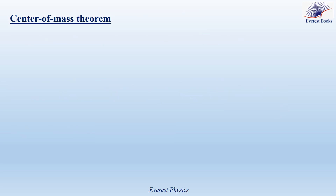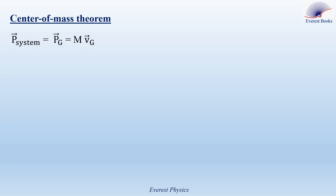Now let's move to the center of mass theorem. We have seen in the last episode that the linear momentum of a system of constant mass is equal to the linear momentum of its center of mass, which equals the mass of the whole system multiplied by the velocity of its center of mass. Now let's apply the general expression of Newton's second law to the system. So the net force acting on the system is equal to the derivative of the linear momentum of the system with respect to time.